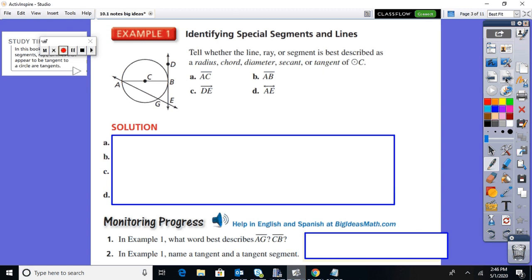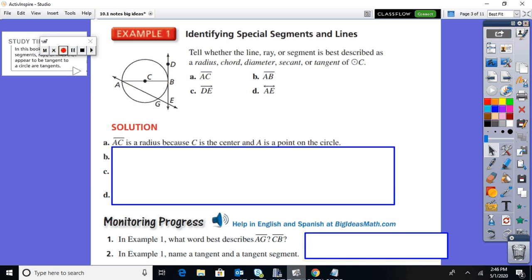First problem: identifying special segments and lines. Tell whether the line, ray, or segment is best described as a radius, chord, diameter, secant, or tangent. So first one, AC of course is a radius. You don't have to necessarily write all this stuff, but this is way more legible than my writing with this pen right now. AC, a radius.